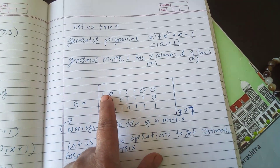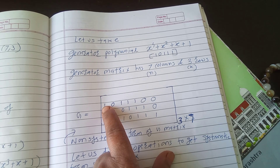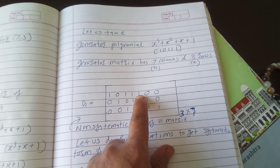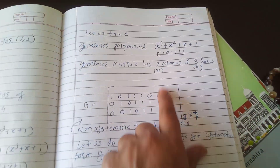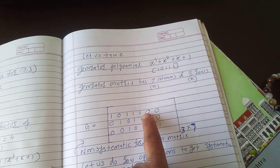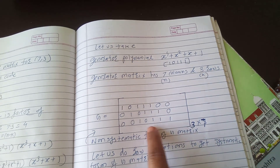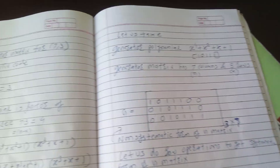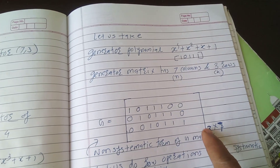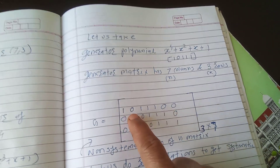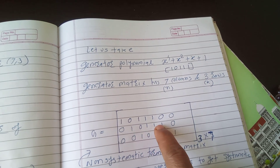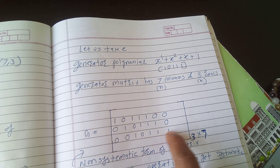The generator polynomial is x^4 + x^2 + x + 1. We represent it as a row: x^4 is there so 1, x^3 is not there so 0, x^2 is there so 1, x is there so 1, x^0 is there so 1 — giving coefficients 1 0 1 1 1. The generator matrix has n=7 columns, so we fill 5 positions and insert 2 zeros, then shift this row by 1 each time to create k=3 rows.